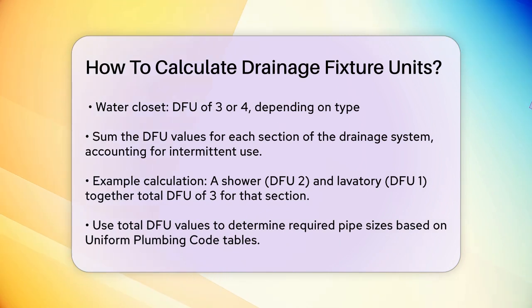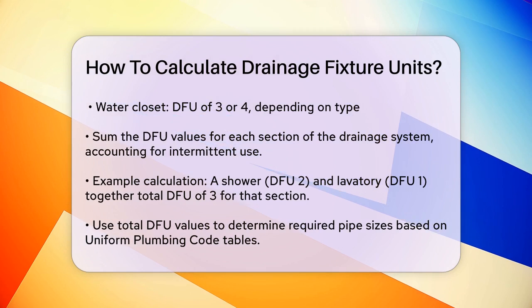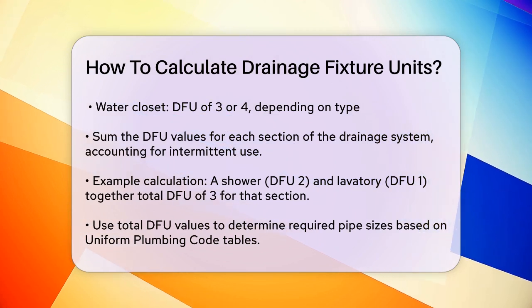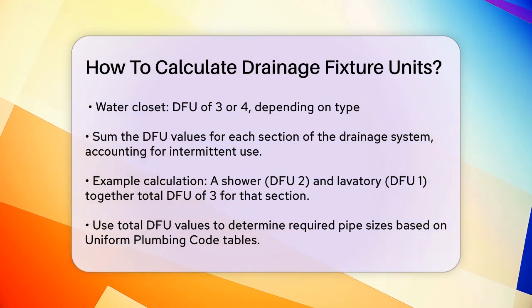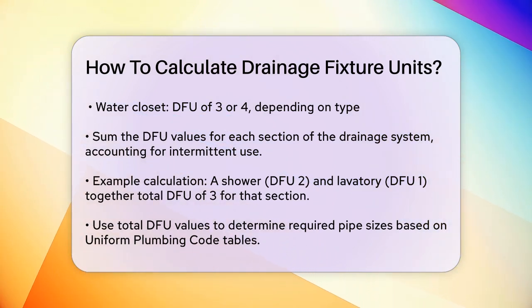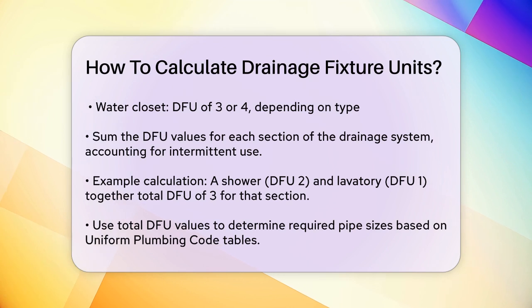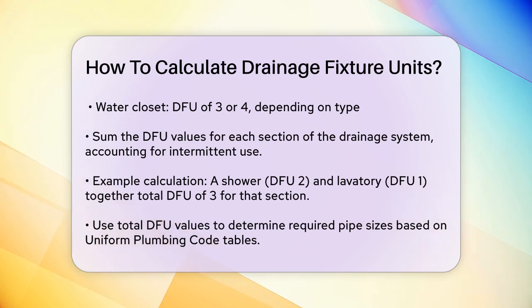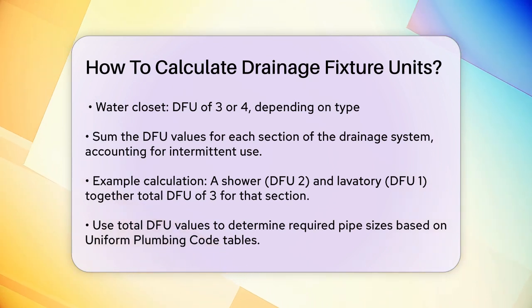Next, you use these total DFU values to determine the required pipe sizes. For example, if a pipe section has a total of 15 DFUs, you would need a three-inch pipe according to the Uniform Plumbing Code tables.